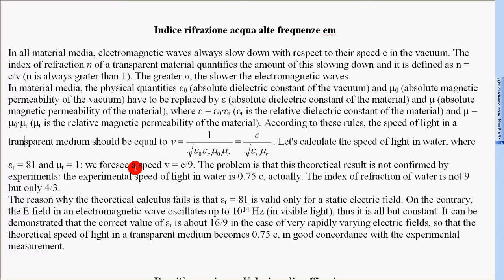We foresee a speed v equal to one ninth of c. The problem is that this theoretical result is not confirmed by the experiments. The experimental speed of light in water is 0.75c actually.